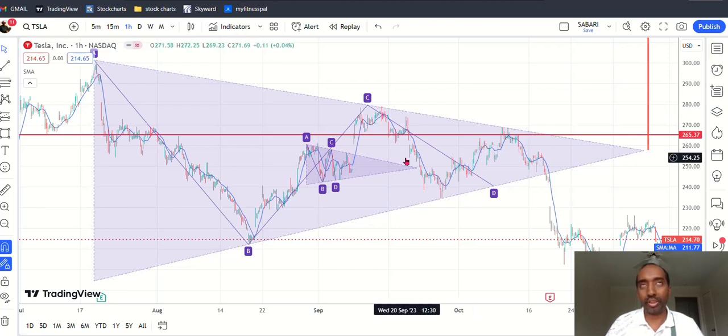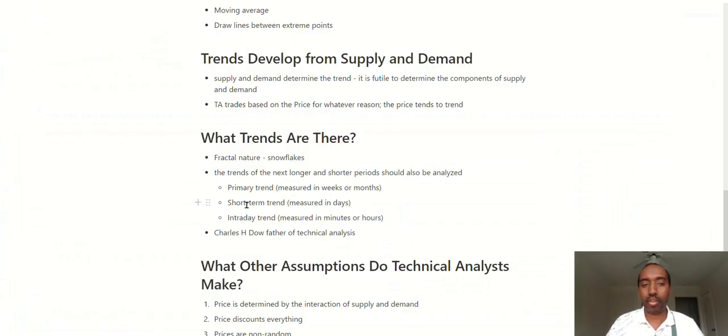The fractal nature means if there are higher highs and higher lows in the daily chart, weekly chart or monthly chart, you can see a group of higher highs and higher lows in the lower time frame creates the higher highs, higher lows or upward trend in the monthly chart, the higher time frames, which is fractal in nature. The trends of the next longer and shorter period should also be analyzed. Primary trends can be identified in weekly and monthly charts. Short term trends can be identified in daily chart. Intraday trends can be identified in minutes or hourly chart.